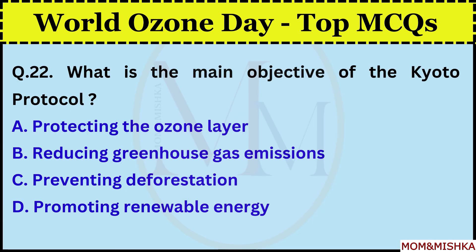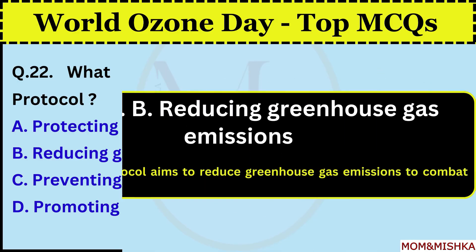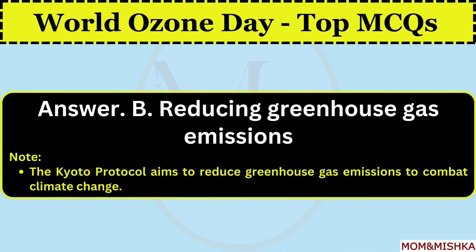What is the main objective of the Kyoto Protocol? Reducing greenhouse gas emissions. Option B. The Kyoto Protocol aims to reduce greenhouse gas emissions to combat climate change.